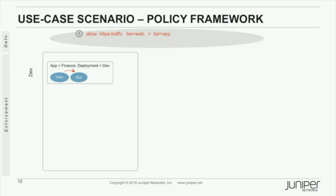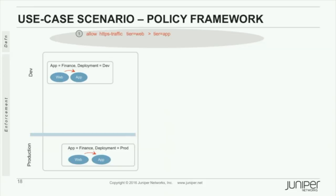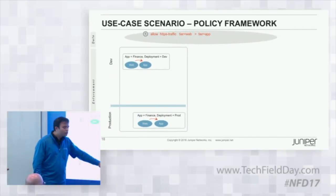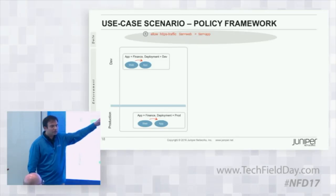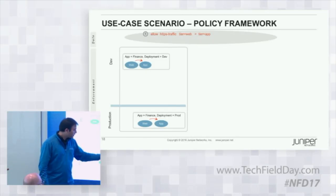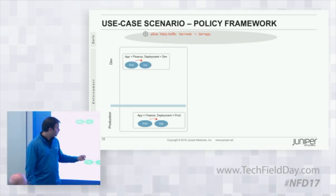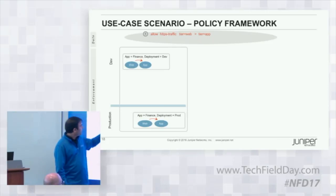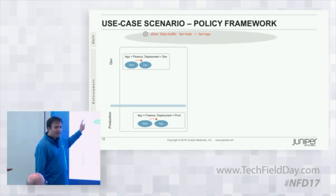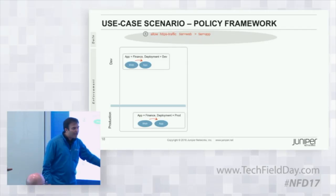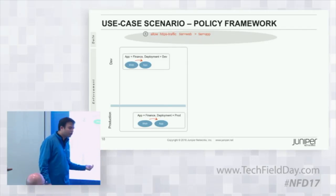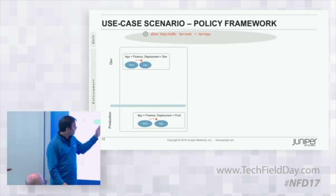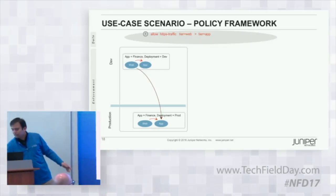This is all good until another instance of the application graduates to the production environment. Now you have another instance. The policy still secures my application — it's fungible — because there's a web component and an app component in the production environment belonging to the finance application. However, this will also allow the web component in dev to talk to the app component in production, because this policy doesn't constrain or prohibit that.